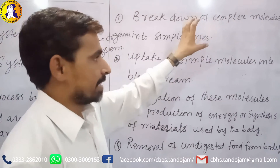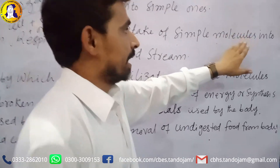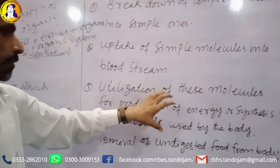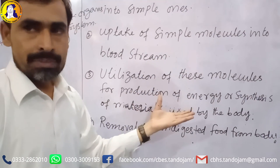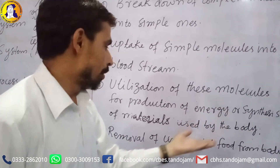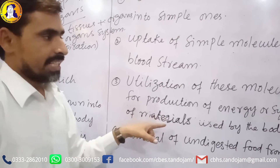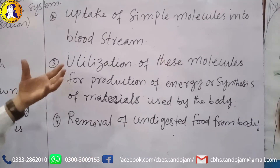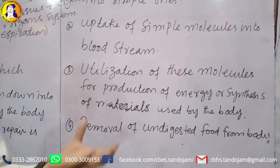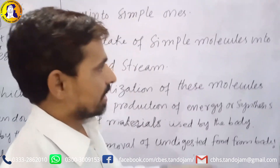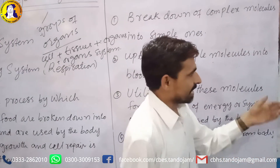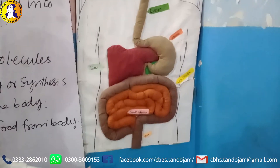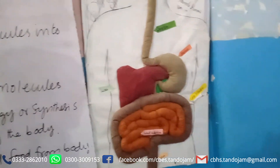Glucose and fatty acids are carried in the blood to be utilized for the production of energy. Other materials such as proteins and DNA are used for various body processes. We will discuss these further in the next lecture.